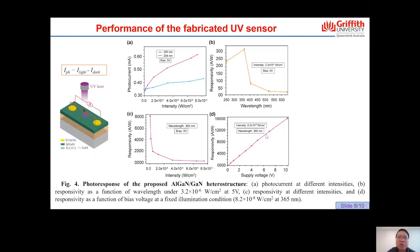On the next slide, we discuss the photoresponse of the proposed AlGaN/GaN heterostructure. Figure 4a shows the photocurrent of the detector under different illumination conditions at 5V. The result demonstrates that the photocurrent increases with increasing illumination intensity due to the generation of more photocurrent carriers at higher intensity. Figure 4b shows the spectral response under illumination of 3.3 × 10⁻⁶ W/cm² at 5V. The device shows a maximum responsivity of 324 A/W at 365 nanometer illumination, because the energy of incident photons is close to the energy bandgap of AlGaN and GaN, generating a large number of electron-hole pairs in the structure.